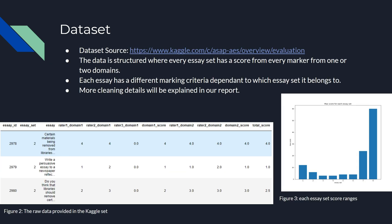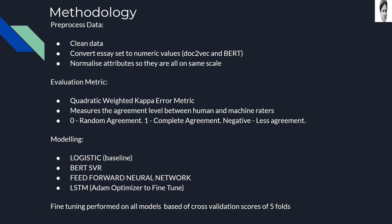The dataset comes from a Kaggle competition. It contains eight types of essays, around 1,000 essays per type. Each type of essay has a different scoring metric, and this explains the performance differences between the essay sets.